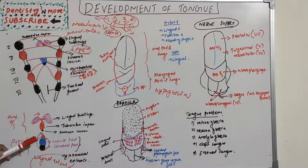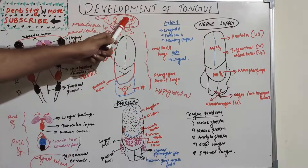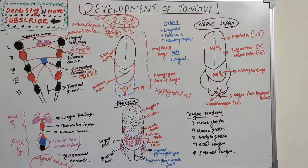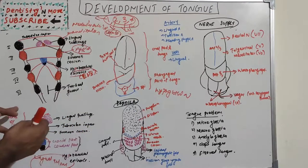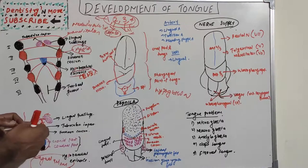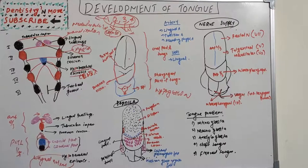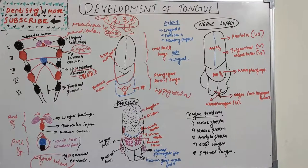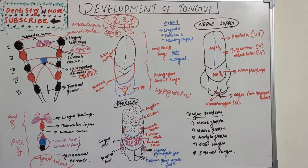To summarize the development: the anterior two-thirds develops from the mandibular arch (arch number one), and the posterior one-third develops from arches two, three, and four. The structures giving rise to the anterior two-thirds are the two lingual swellings and the tuberculum impar, which all grow and merge. The foramen cecum separates the anterior and posterior portions. The posterior one-third develops from the copula and hypobranchial eminence, where the hypobranchial eminence overgrows the copula, degeneration creates the lingual sulcus, and provides tongue mobility.